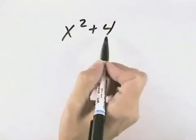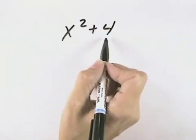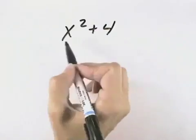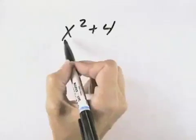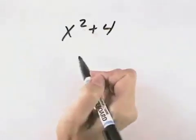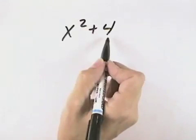So the only possibility, since there's only two terms and there's no greatest common factor, the only possibility is the sum of two cubes. But we can see that x squared is not a perfect cube because it's a second power. So this is not the sum of cubes.